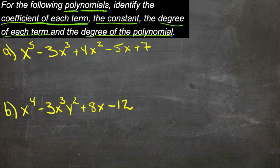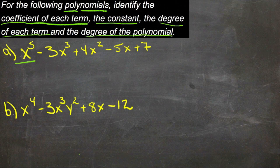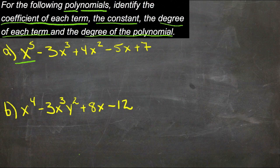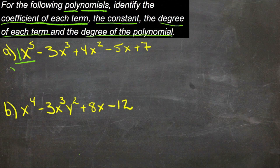Our first term here is x to the fifth. So the coefficient of that would be the number of x to the fifths that we have. In this case, 1, because there's sort of a hidden 1 there. So our coefficient there is 1.